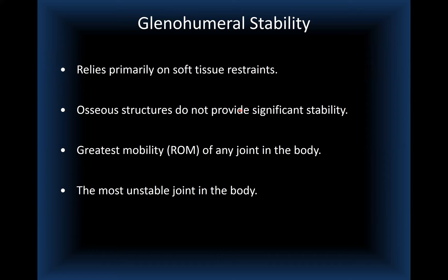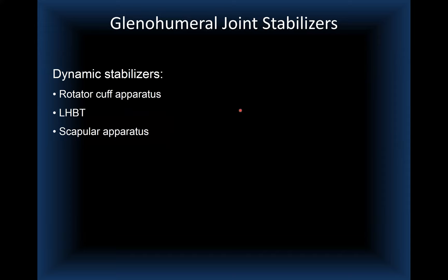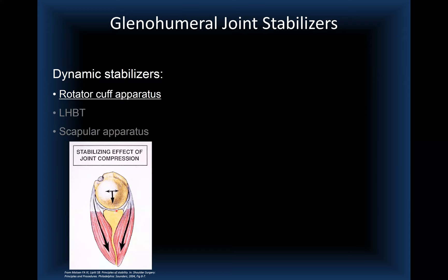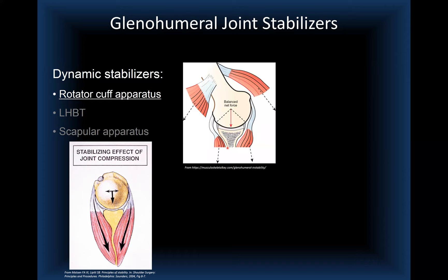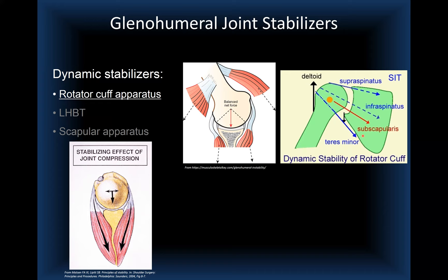For stability of the glenohumeral joint, we have dynamic and static stabilizers. Among the dynamic stabilizers are the rotator cuff apparatus, the long head of the biceps tendon, and the scapular apparatus. The rotator cuff has a stabilizing effect via compression. The balance net force of the rotator cuff vector creates a compression effect into the joint, and there is also a force coupling between the rotator cuff and the deltoid.